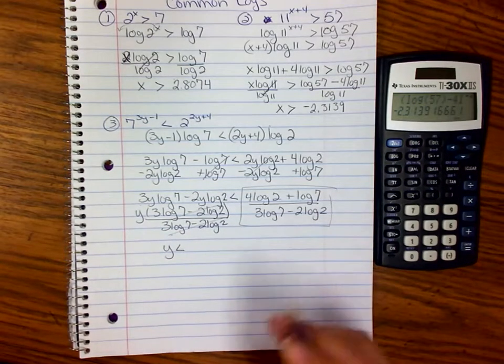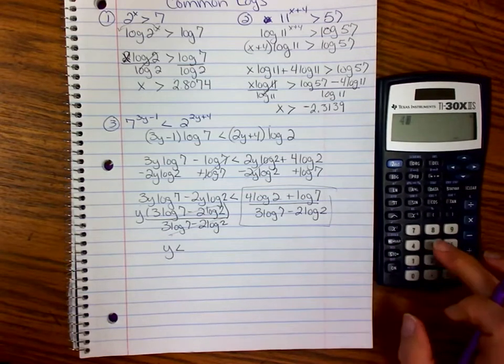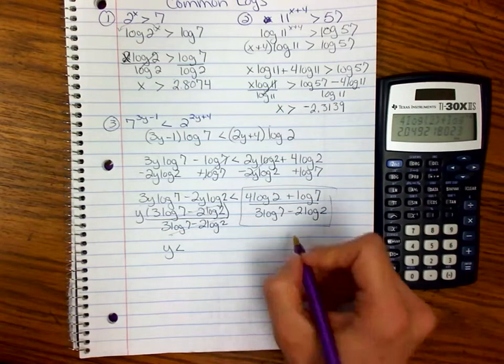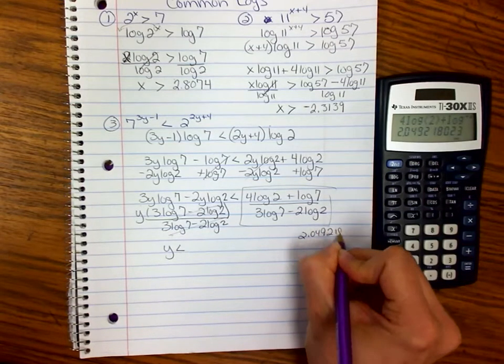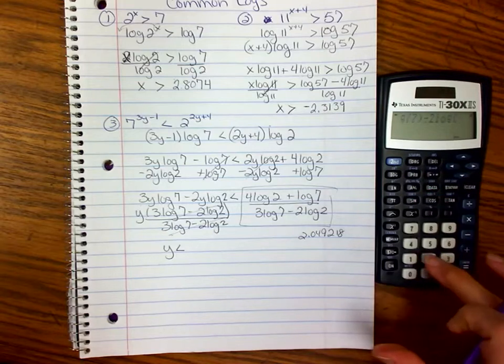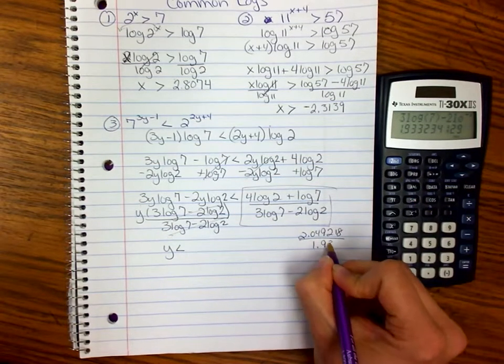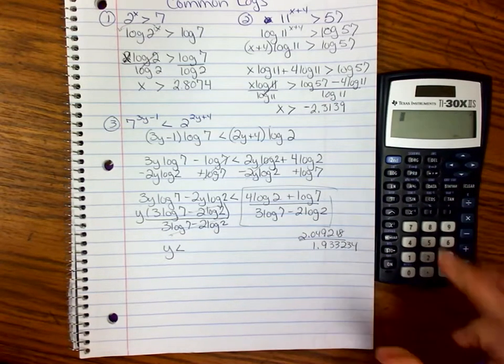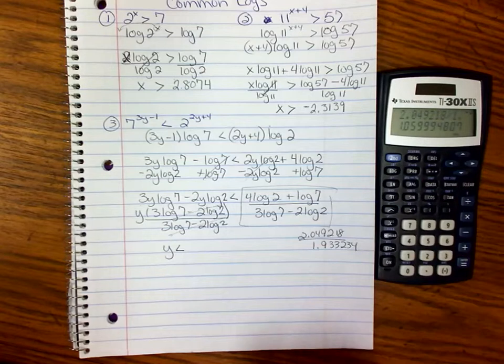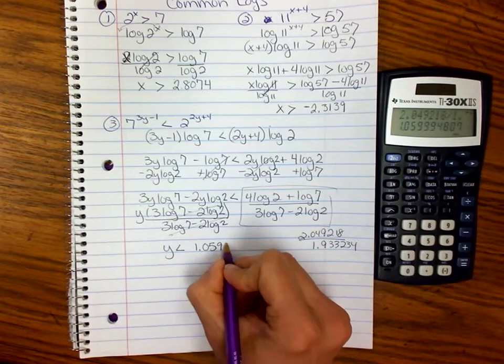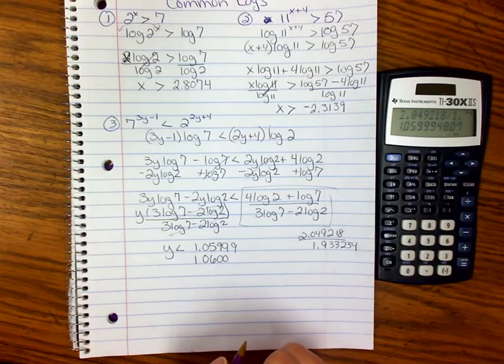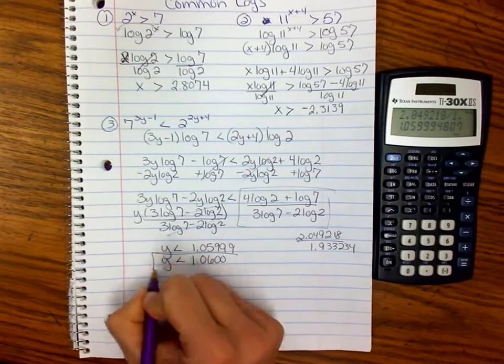Now I need to figure that out. You can do it in steps too. We'll do it in steps. We'll do the numerator first: 4·log(2) + log(7), and that is 2.049218. Then we'll say 3·log(7) - 2·log(2), and that is 1.933234. Then we'll divide. So 2.049218 divided by 1.933234 gets me 1.0599. Since we're rounding to that fourth decimal place out, that should be the answer.